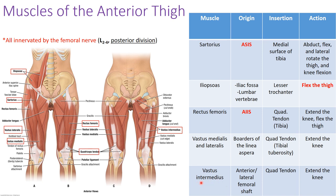Lastly, the vastus intermedialis sits underneath the rectus femoris; when the rectus femoris is removed, you can see this muscle beneath it. Its origin is the anterior and lateral aspect of the femoral shaft. It inserts onto the tibia via the quadriceps tendon, and its primary action is to extend the knee. All muscles of the anterior thigh — iliopsoas, sartorius, rectus femoris, vastus lateralis, vastus medialis, and vastus intermedialis — are innervated by the femoral nerve, with spinal segments L2 through L4.